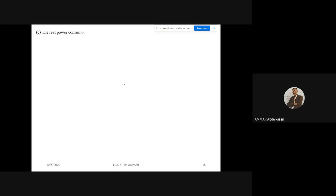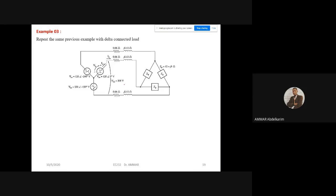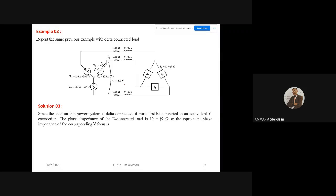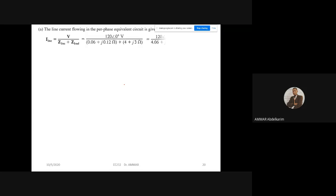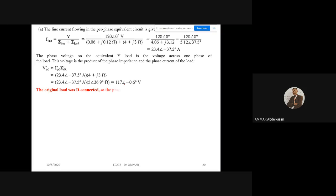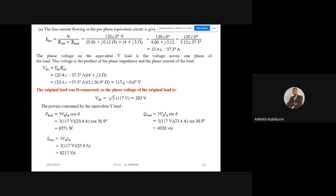Then we have seen another example with a delta-connected load. Since the load is delta-connected, it must be converted into Y-connected, so the load will be divided by three. So the per-phase impedance in Y-connection equals to the per-phase impedance of delta-connection over three. Then we do our calculation. However, when we calculate the voltage, we must multiply it again by square root of three because the original voltage was delta-connected.